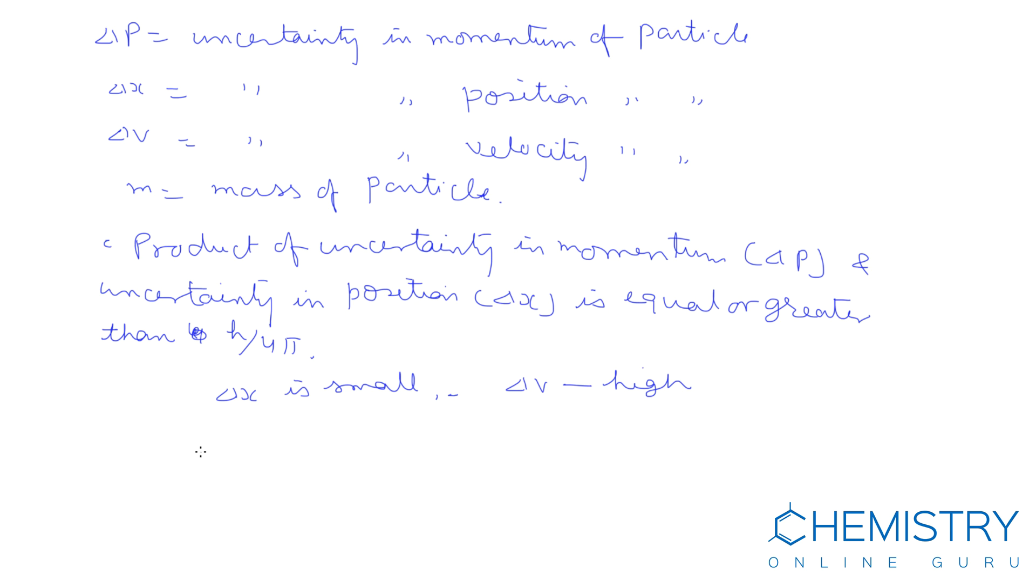If velocity of a small particle is determined accurately, then its position uncertainty, that is delta x, is large. So we can say Heisenberg's principle is applicable.